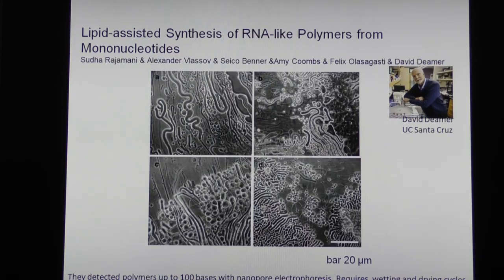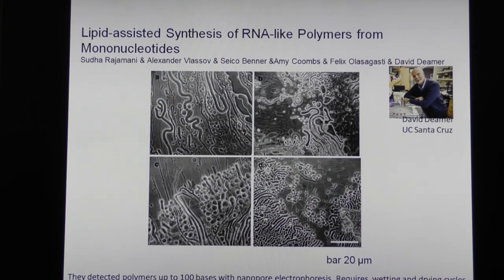Deamer's day job was sequencing DNA, which is a big business. He measured polymers up to 100 bases long — that's actually bigger than the transfer RNAs in our cells, and big enough to fold up and do interesting things. What I couldn't get from him or anyone else is: what's the sequence of that RNA? Is it an interesting sequence? Is it boring? What does it do?